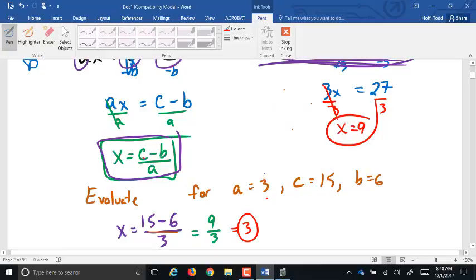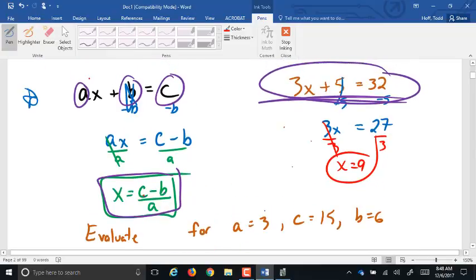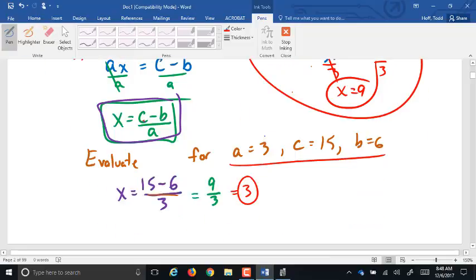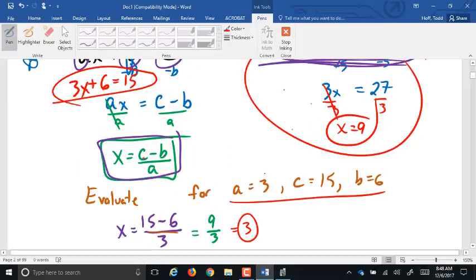We could have got the same answer by putting those values in here. We would have had 3X plus 6 equals 15. We could have still solved for X, but we would have had to go through this process. Like I said, if you've only got one set of values here, it's probably easiest. You have to do this, put them in and solve that equation. If you're going to be doing it over and over again for different values, you can see why this would be a little quicker, a little handier.